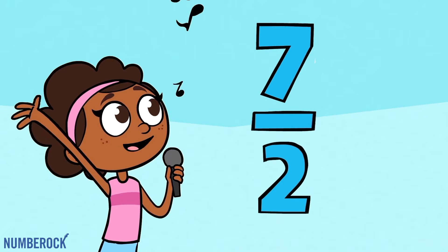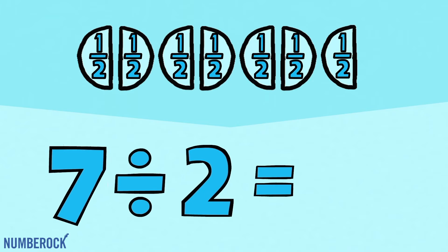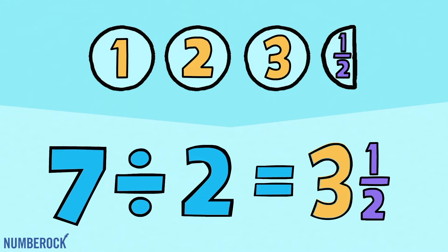When there's an improper fraction to convert, divide the top by the bottom and then insert the remainder as the numerator, the divisor as the denominator.